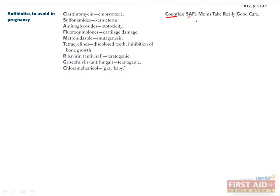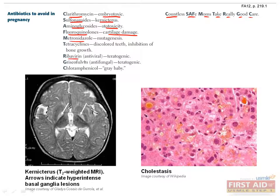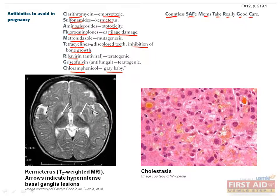Remember the mnemonic 'countless safe moms take really good care' to help learn antibiotics and their common side effects when taken during pregnancy. Clarithromycin is frankly embryotoxic. Sulfonamides can cause kernicterus. Aminoglycosides are associated with ototoxicity, while fluoroquinolones are associated with cartilage damage, although this has only been demonstrated in animal models. Metronidazole, ribavirin, and griseofulvin are all teratogens. Chloramphenicol causes gray baby syndrome. Tetracyclines are classically associated with discolored teeth as well as inhibition of bone growth.